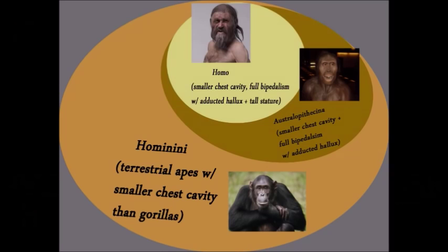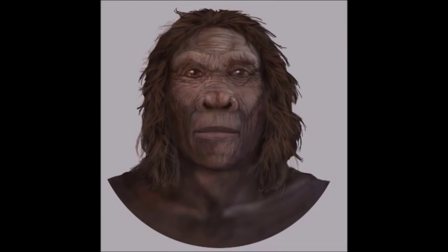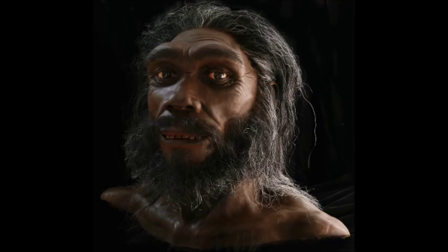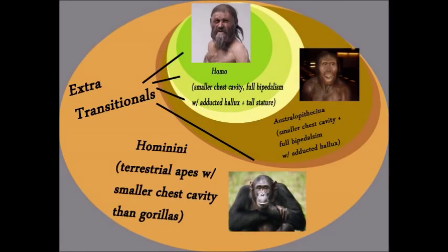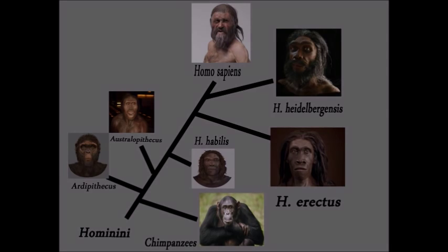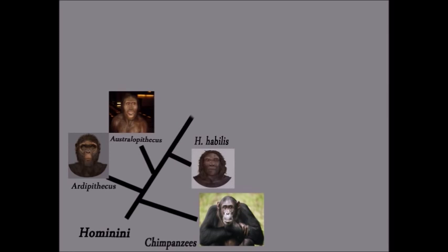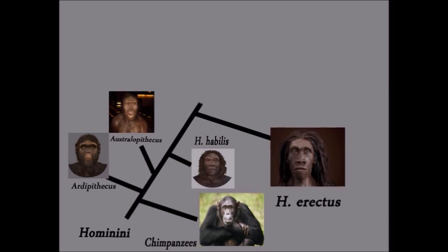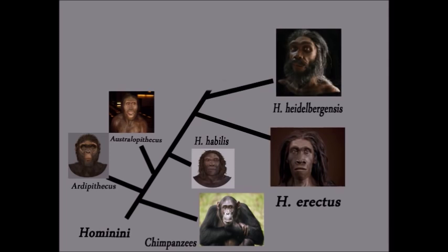Australopithecus isn't the only transitional we can consider — we can also consider Ardipithecus, Homo habilis, Homo erectus, and Homo heidelbergensis, all of which indicate a seamless evolutionary trend showing less chimp-like features in favor of more human-like features. It should also be noticeable that the more transitionals we can deduce to exist, the easier it is to infer direct ancestral transitionals, because the closer we get to the target species, the more narrow the trait criteria becomes, reducing the number of potential ancestral species that may have existed.